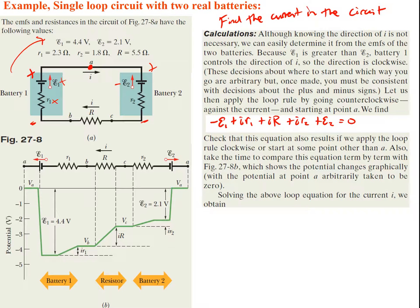Compare this equation term by term with the figure, which shows the potential changes graphically, with the potential at point A arbitrarily taken to be 0. Starting at A and going counterclockwise: we hit R1 and gain potential, then get to the next resistor and get IR, then the internal resistance IR2, then the last EMF, and then we're back down to 0.